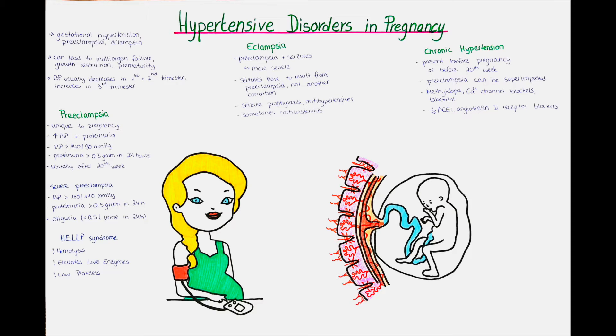Gestational hypertension, pre-eclampsia and eclampsia can all be summarized under the umbrella term hypertensive disorders in pregnancy, and they are a major contributor to maternal and perinatal morbidity and mortality.